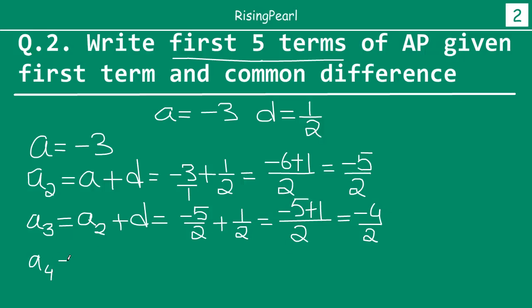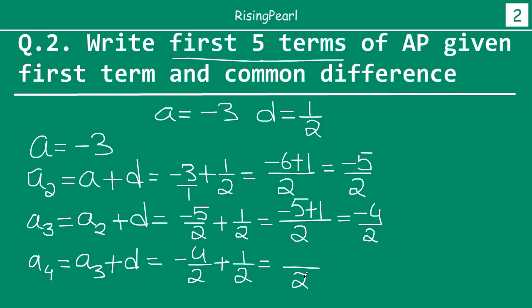Because my fourth term will be my third term plus d. So my third term is minus 4/2, plus 1/2. The reason I left it as minus 4/2 instead of simplifying to minus 2 is that it will be easier to take the LCM. So here we will have 2 as denominator, so this will be minus 4 plus 1, or in other words minus 3/2.